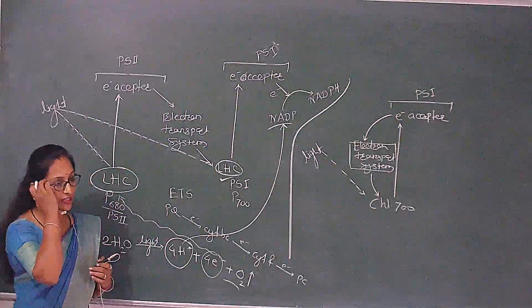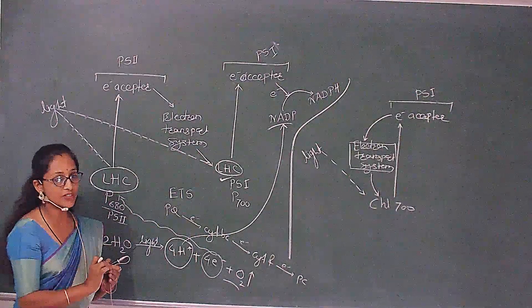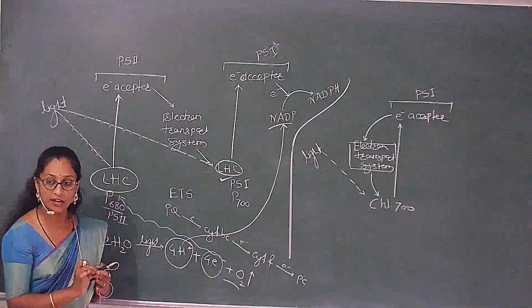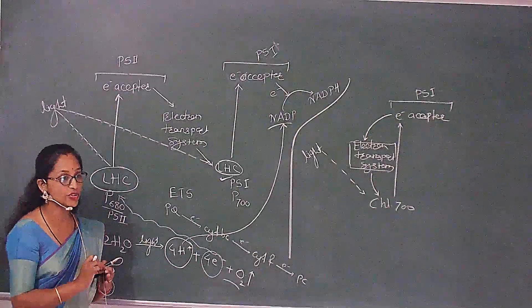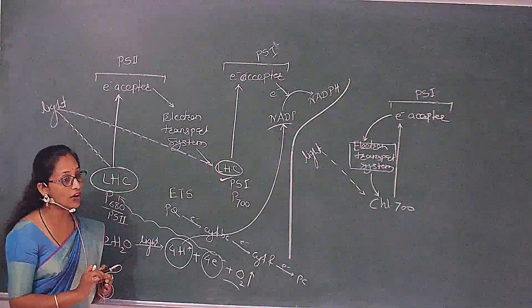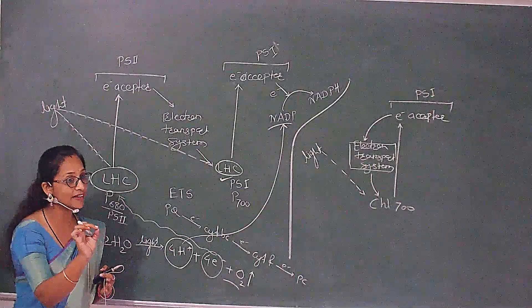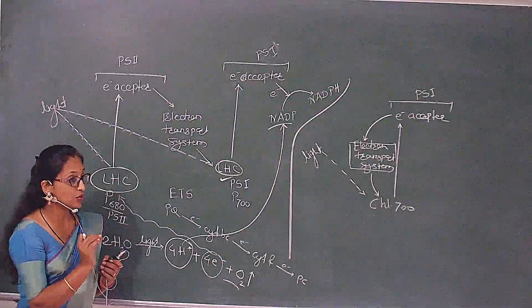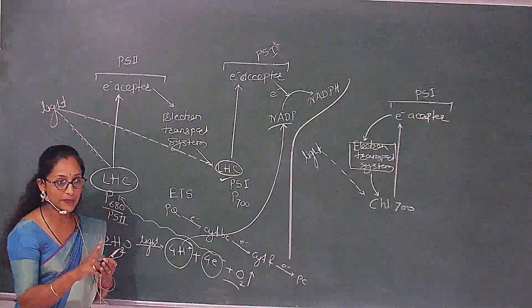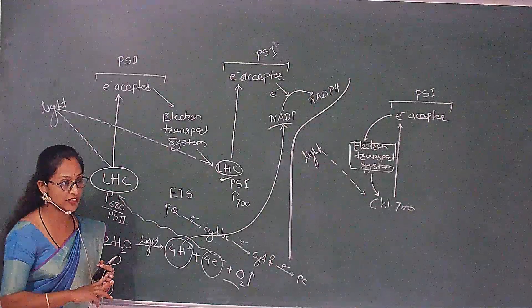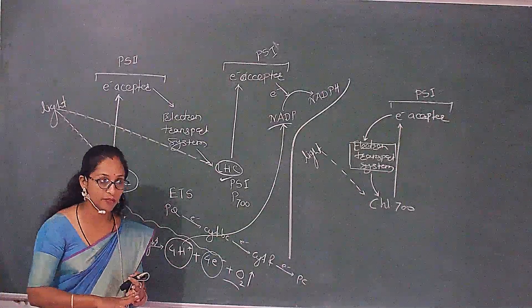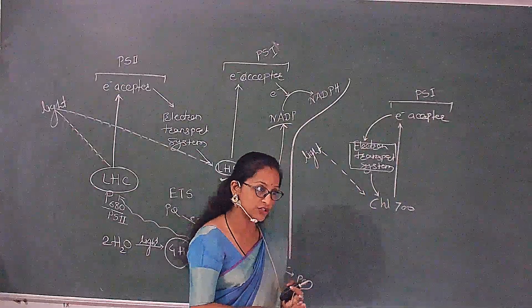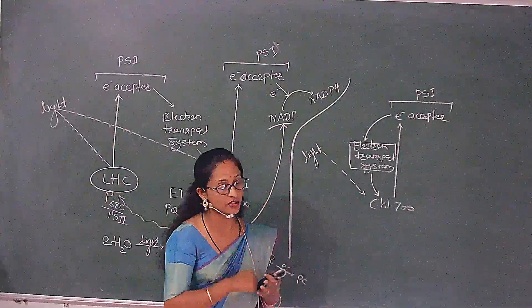The next question focuses on this: photosynthesis in the presence of light is called a light reaction. It is also called a photochemical reaction, hill reaction, and light-dependent reaction — these are all parallel terms. In sunlight, two types of light are present: one in scattered form and another in wave form — wave as well as scattered form.